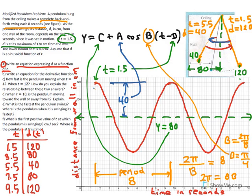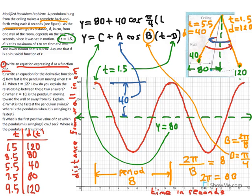So now we can write the equation for Part A. D equals 80 plus 40 times cosine of (π/4)(t − 1.5). That is our sinusoidal model, modeling the distance the pendulum is from the wall in centimeters as a function of time in seconds since the pendulum was set in motion.